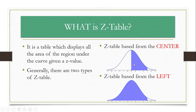In symbols, the area for the center-based Z-Table will look like this: the probability of Z is greater than 0 but less than A, where A is a particular value of Z. In this case, the particular value of A is 2, so Z is equal to 2.